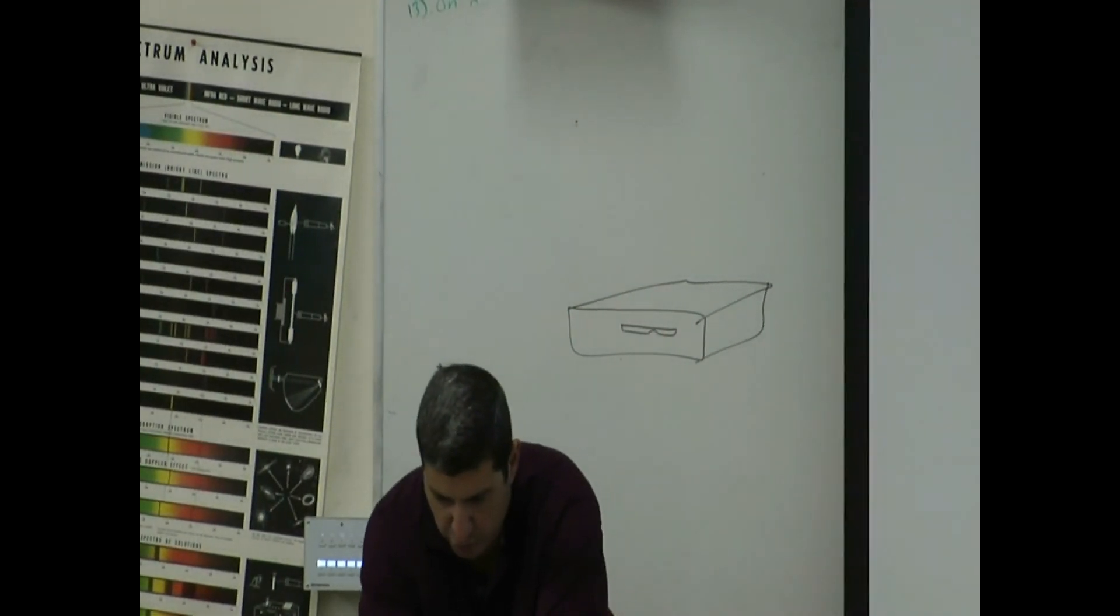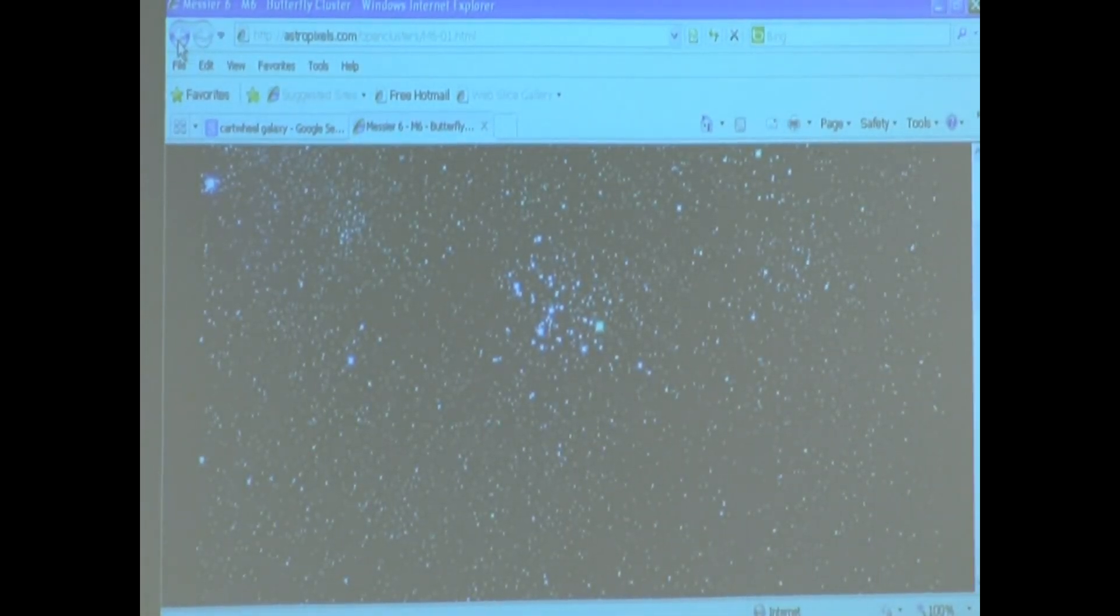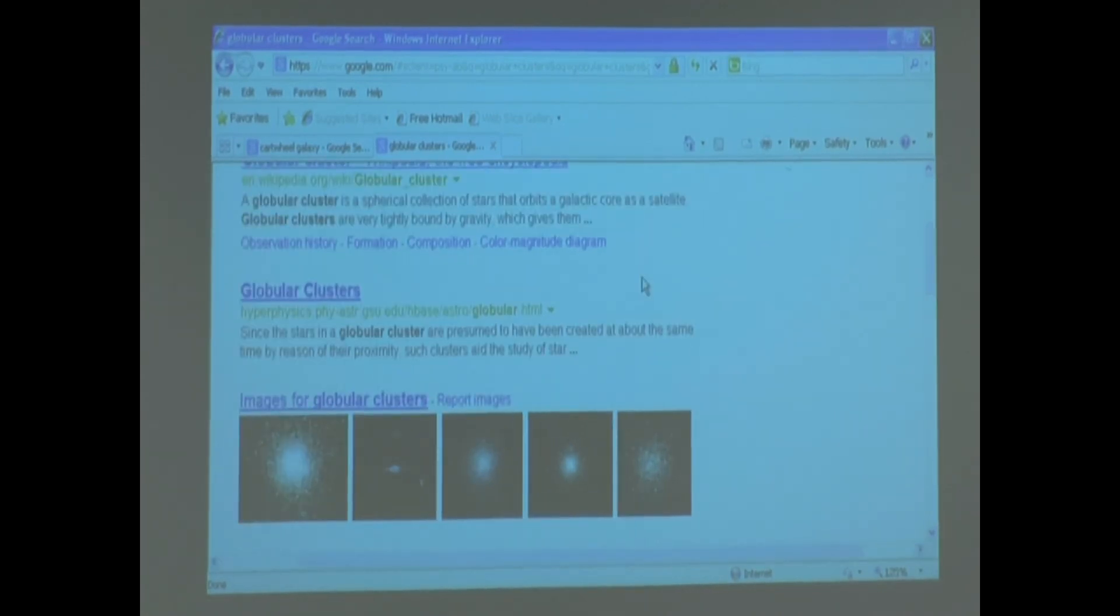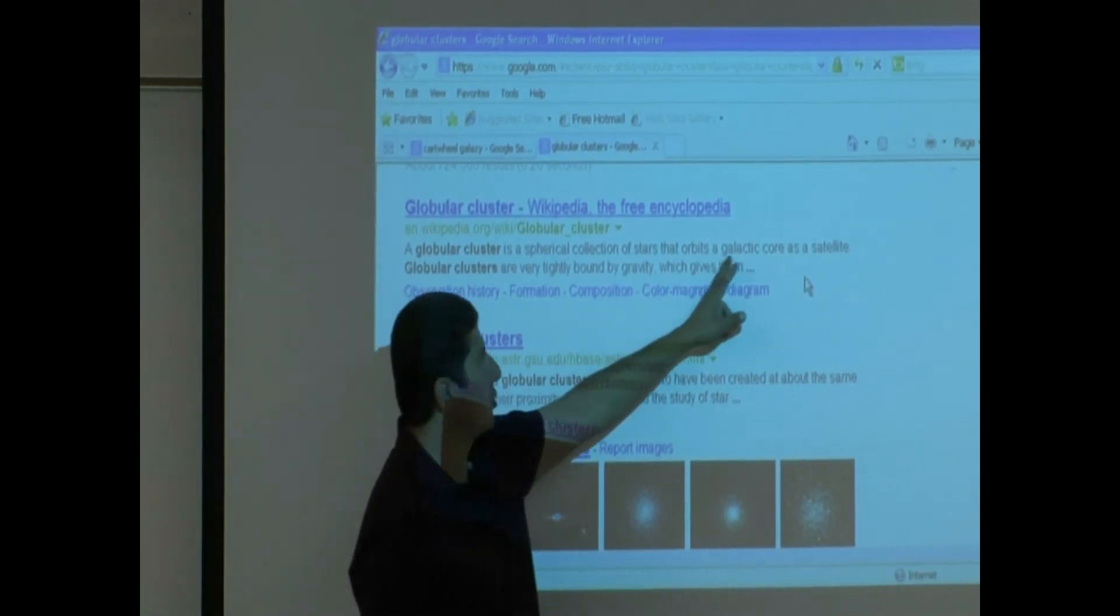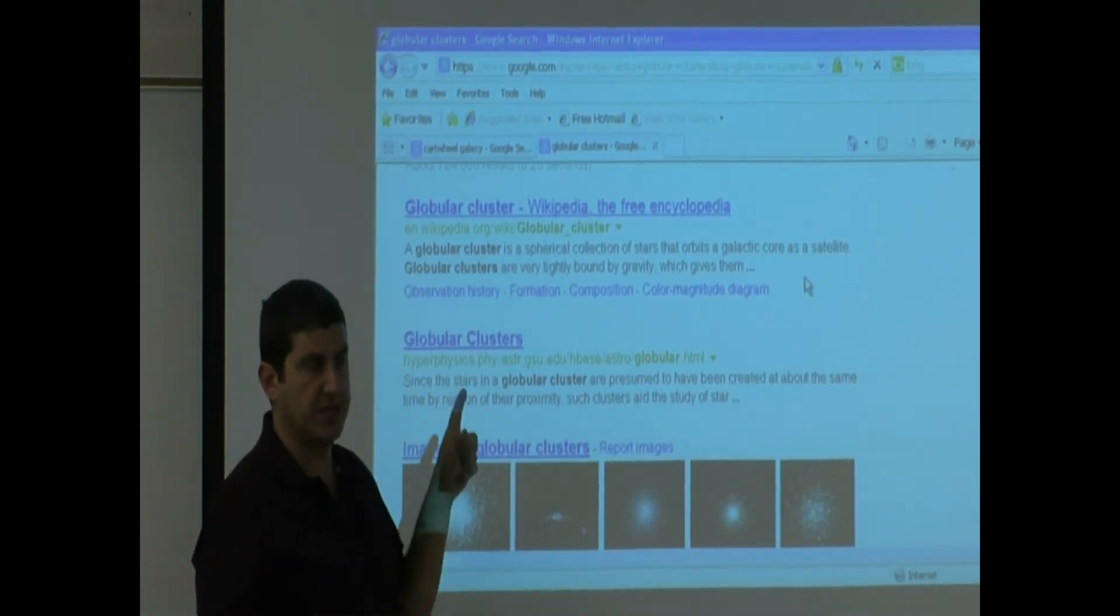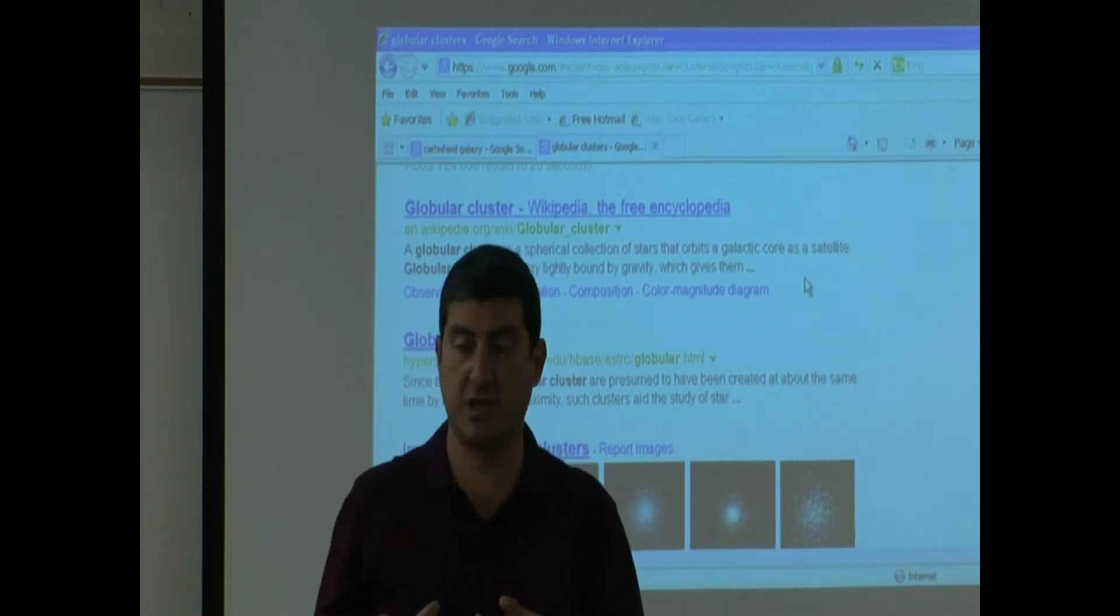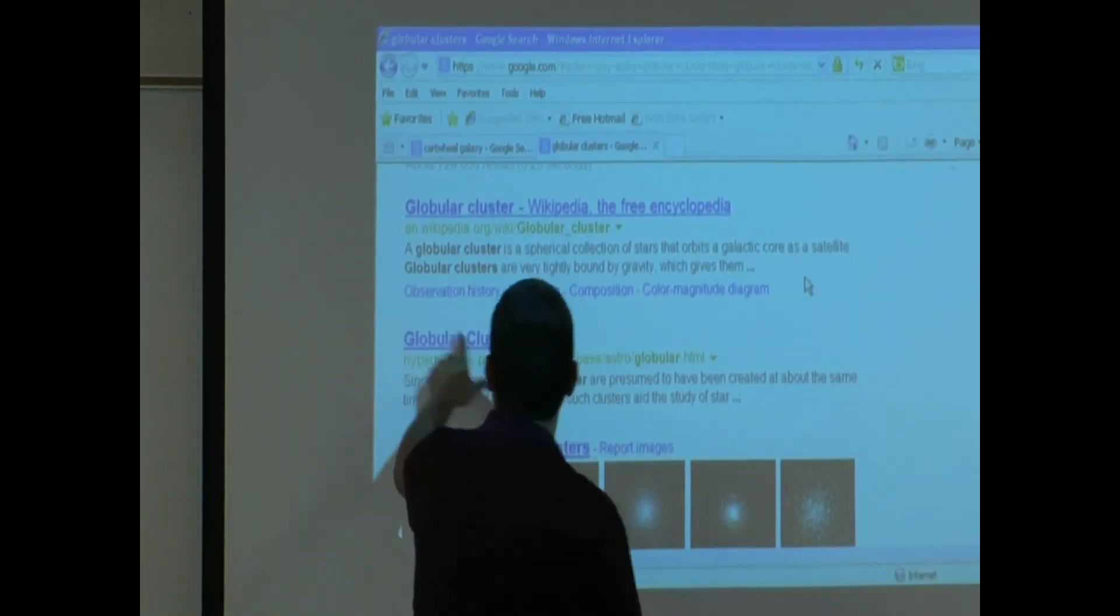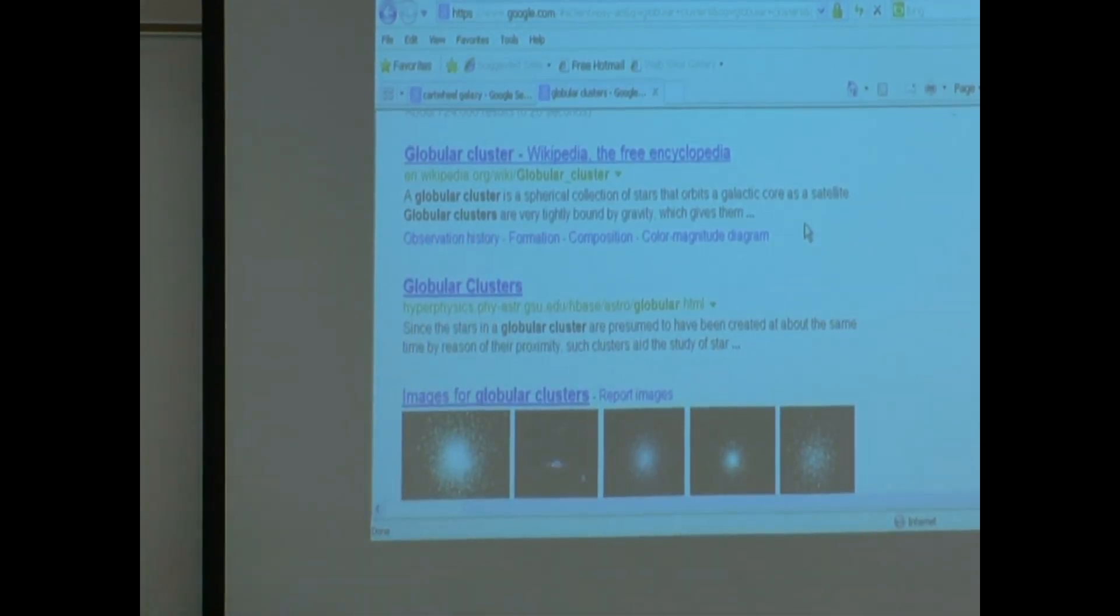If we go back to the website and see if it even says here, see a sentence from the Wikipedia, a globular cluster is a spherical collection of stars that orbits a galactic core as a satellite. And then what we're going to see next is when we talk about the Milky Way, we're going to ask the question, where are the globular clusters in the Milky Way? And then you're going to see that they go around the center of the Milky Way, like a satellite. Globular clusters are very tightly bound by gravity, which gives them, and then so on and so on.